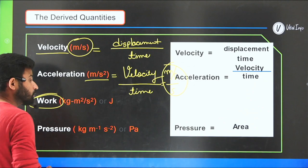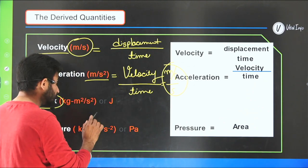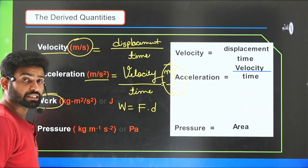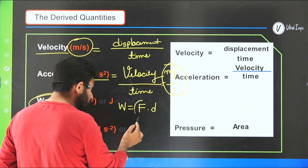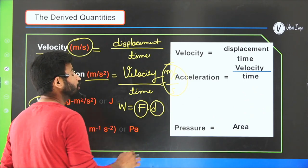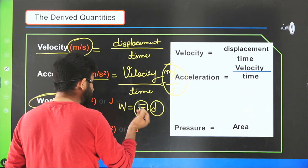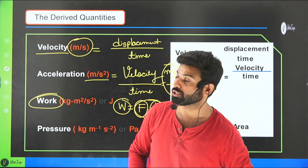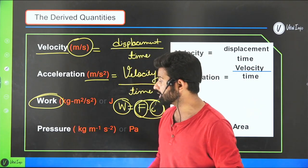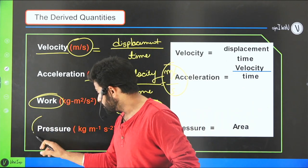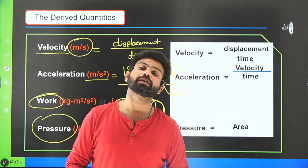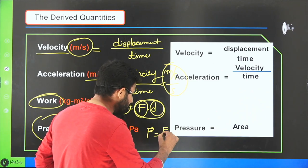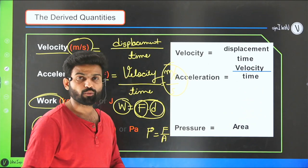Work is also a derived quantity. Work equals force dot displacement — force multiplied by displacement. Force is itself a derived quantity and displacement is a fundamental quantity. So the unit of work is kg·m² per second squared. Pressure is also a derived quantity, with the formula P equals F upon A, and its unit is Pascal.